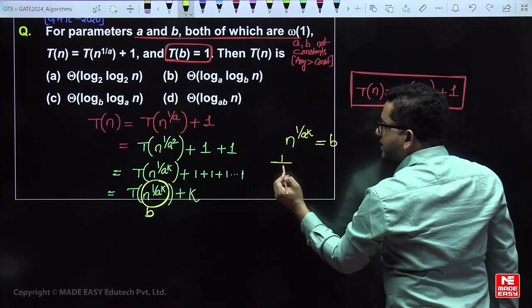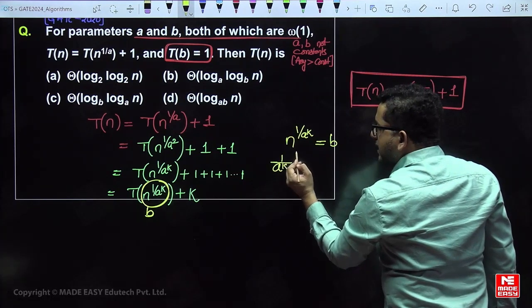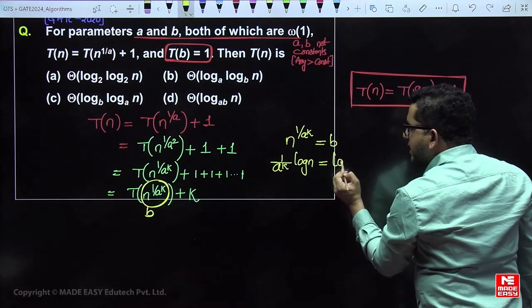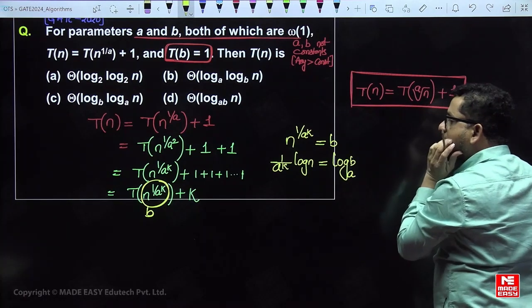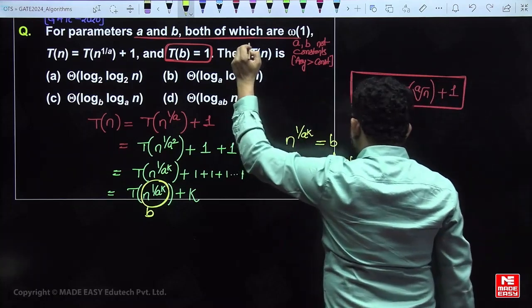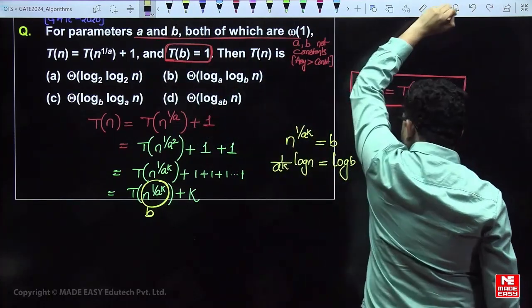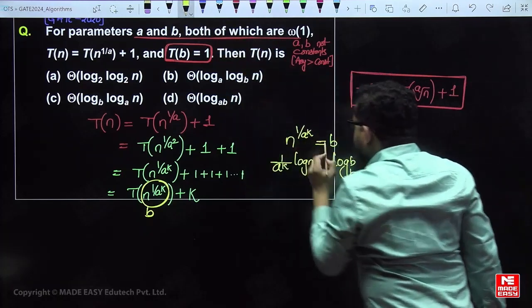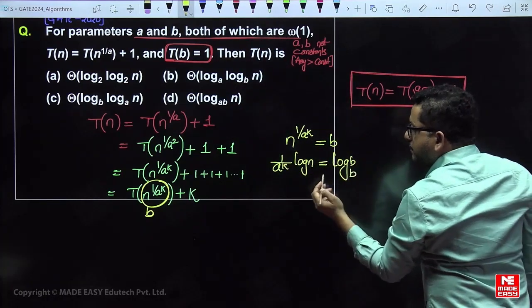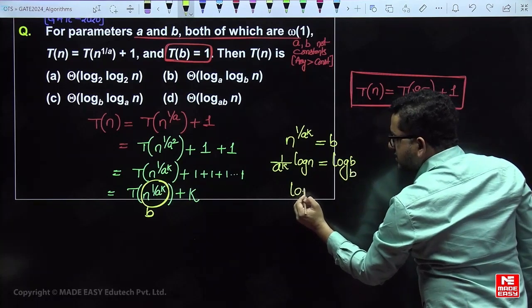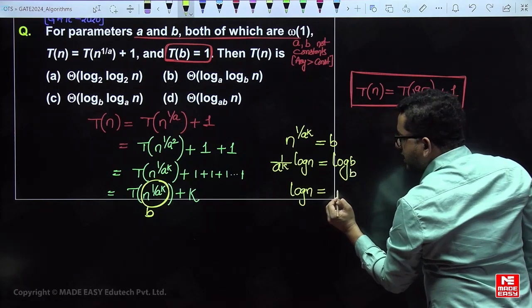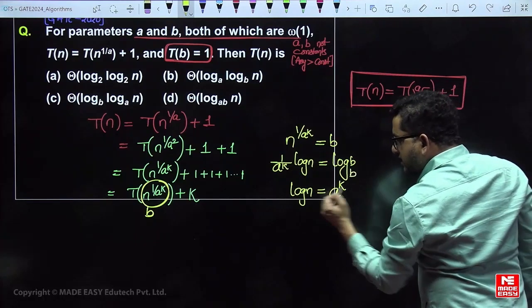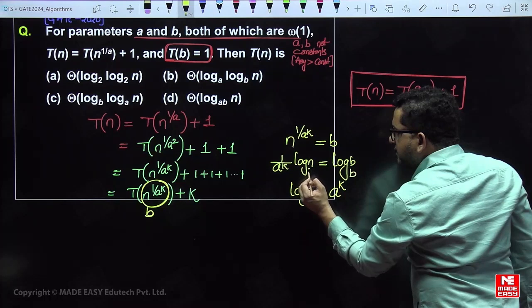Applying log base b: (1/a^k) · log n = log_b(b) = 1. So log n becomes a^k. To isolate k, apply log with base a again.